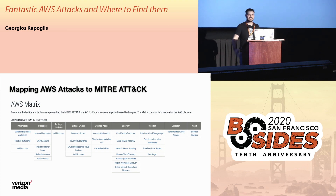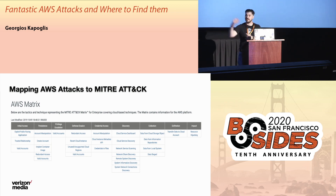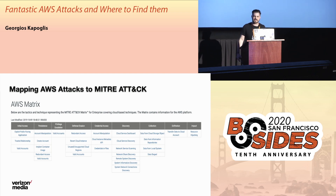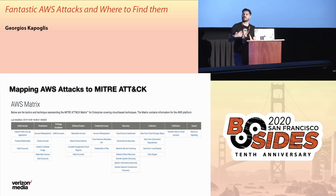The tactics essentially are a goal of the attacker, based on the step of the kill chain that the attacker is at. The goal might be the initial access, or the goal might be to establish persistence. And then the drop-down is a specific technique being used for that particular attack.